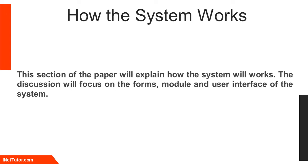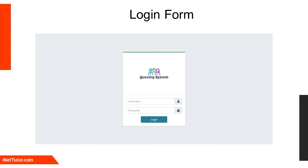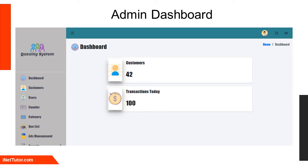This section explains how the system works. The discussion focuses on the forms, modules, and user interface. The front end will display information about the counter number and the corresponding ticket number of customers occupying their designated counter. A login form will be used by intended users to log into the system, with their own username and password. The admin dashboard serves as the home page for the system administrator and displays the number of customers and number of served transactions today.